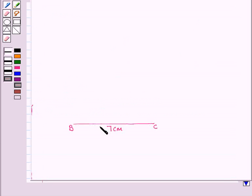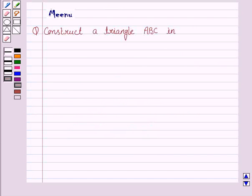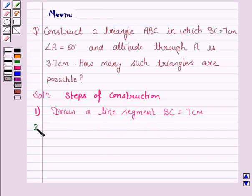So this is the line segment BC and it has length 7 cm. Now the second step is to draw the angle CBX equal to 60 degrees.